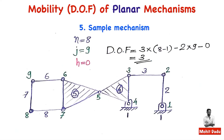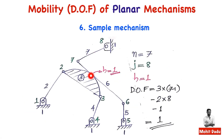Additional sample mechanisms are shown where links, equivalent binary joints, and higher pairs are numbered — including one with a point contact giving a higher pair h = 1. You can pause and verify the degree of freedom calculations. This completes the mobility analysis of planar mechanisms. In the next video we will study the Grashof criteria and the introduction to four-bar chains, which is the fundamental mechanism to begin with. Thank you.